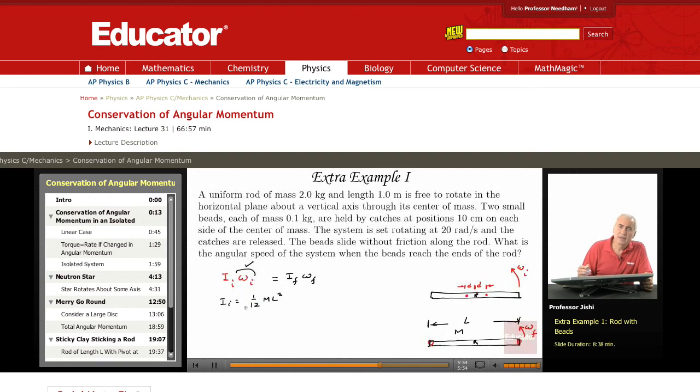Plus, I have the moment of inertia of the two beads. Each bead has a mass little m, and it's at the distance d from the center, so each one has md^2, so that's 2md^2.